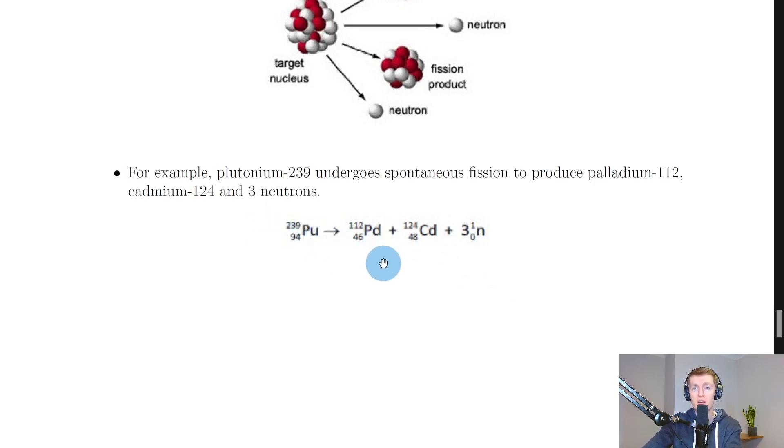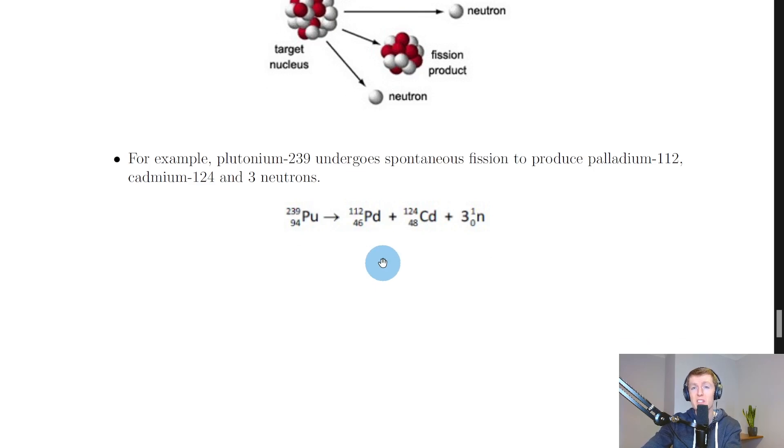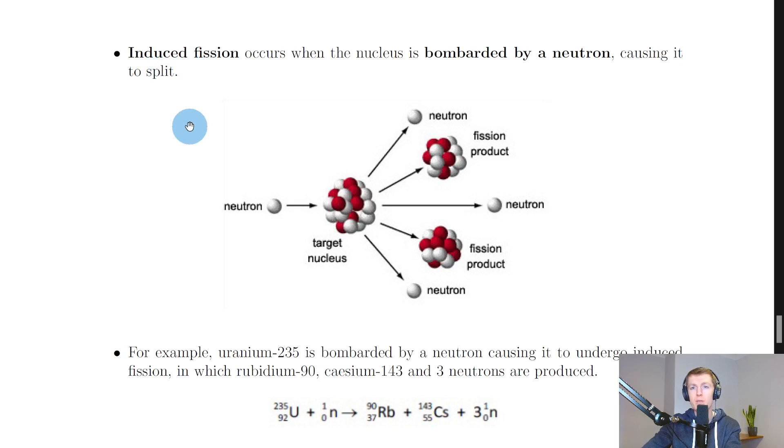And another hint telling us that it's a fission reaction is that three neutrons are released. The other type of nuclear fission is called induced fission, and we say that induced fission occurs when the nucleus is bombarded by a neutron causing it to split. So this word induced suggests that we are causing something to happen—we're causing the fission to happen, i.e., the splitting of the nucleus—and we can do that using a neutron.